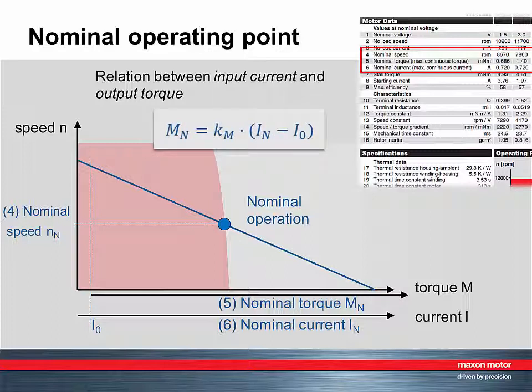Therefore, the output torque is related to the input current by the torque constant corrected by the amount of friction. And the last parameter is the nominal speed. Nominal speed has no particular meaning. It is just where the speed torque line crosses the border of the continuous operating range.